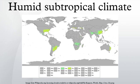In North America, humid subtropical climates are almost exclusively the domain of the American Gulf and South Atlantic states, including the eastern half of Texas, Oklahoma, Louisiana, Arkansas, Alabama, Mississippi, North Carolina, South Carolina, Virginia, Tennessee, Georgia, and Florida. On the Florida peninsula, the humid subtropical climate gives way to the tropical climate of South Florida and the Florida Keys.